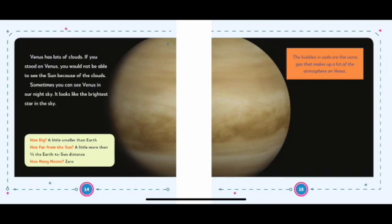Sometimes you can see Venus in our night sky. It looks like the brightest star in the sky. The bubbles in soda are the same gas that makes up a lot of the atmosphere on Venus.